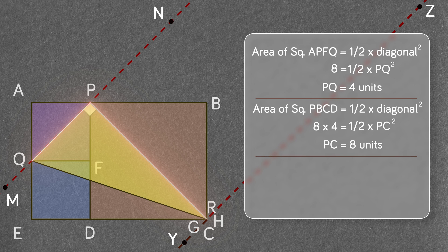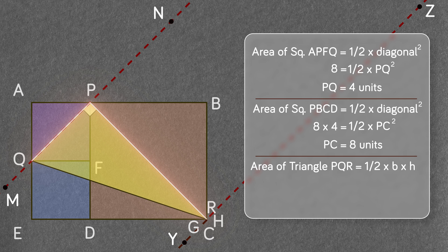Therefore, the area of the triangle PQR equals to half base times height equals to half 4 times 8 equals to 16 square units.